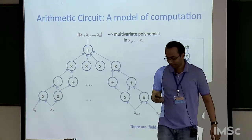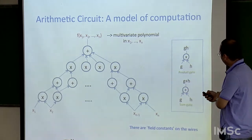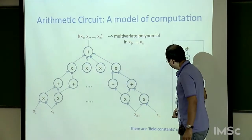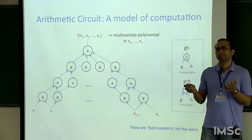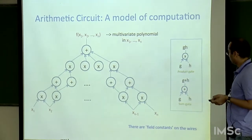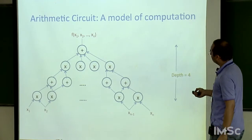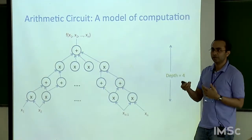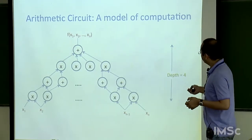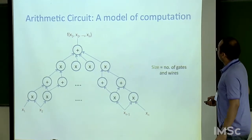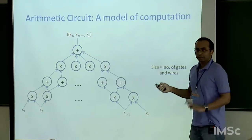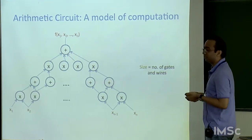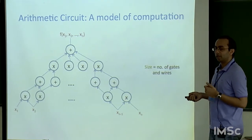The leaves also have field constants — rational numbers or integers and so on. The depth of a circuit is the number of layers of gates, equivalently the longest path from input to output. The size is the number of gates and wires. These are the natural measures of complexity: depth and size.